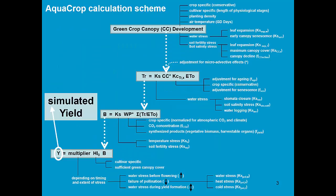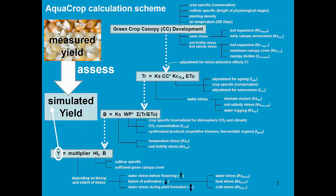Here we see the calculation scheme of AquaCrop. At the end of the simulation, we get the yield, and the simulated yield might be different from the observed yield. The measured yield can now be used to assess the simulation in AquaCrop. By just changing the harvest index, it is very easy to match the simulated yield with the observed yield.